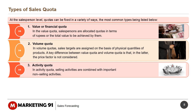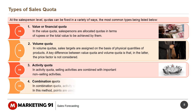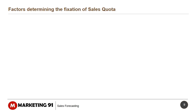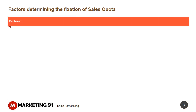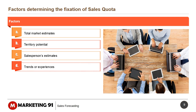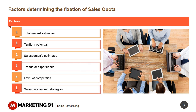In the Activity Quota, selling activities are combined with important non-selling activities. In the Combination Quota, activity quota is combined with volume quota or value quota, and points are used as a common parameter to quantify different quota indicators. The factors determining the fixation of sales quota include: Total Market Estimates, Territory Potential, Salesperson's Estimates, Past Sales Trends or Experiences, Level of Competition, and Sales Policies and Strategies.